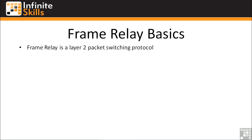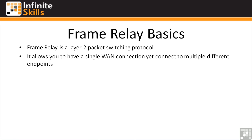Frame relay is a layer-two packet switching protocol. The nice thing about frame relay is it allows you to have a single WAN connection at your data center or at all of your branches, yet connect to multiple different endpoints. Before the advent of frame relay, if you had a network with 25 different locations, you had to have 25 different point-to-point connections all terminating into a single router, and you had to configure routes to all of those locations on each interface — it became very unwieldy.